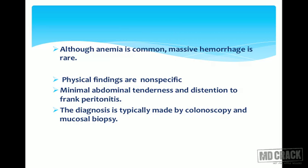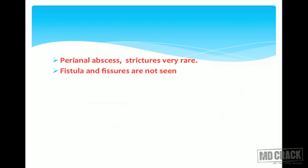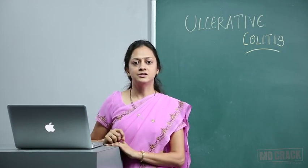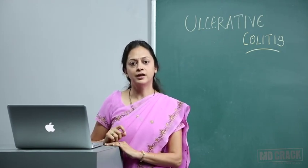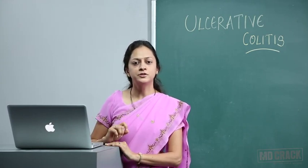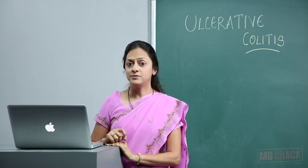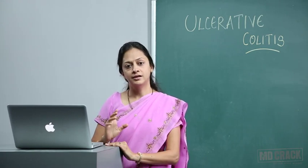Although anemia is common, massive hemorrhage is rare. Physical findings are nonspecific — there might be minimal abdominal tenderness and distension to frank peritonitis. The diagnosis is typically made by colonoscopy and biopsy. Perianal abscesses and strictures are very rare, and fistula and fissures are not seen, as perianal disease is a feature of Crohn's colitis and not ulcerative colitis.